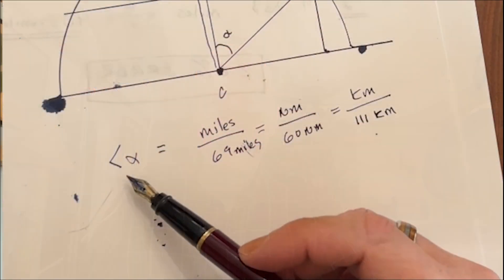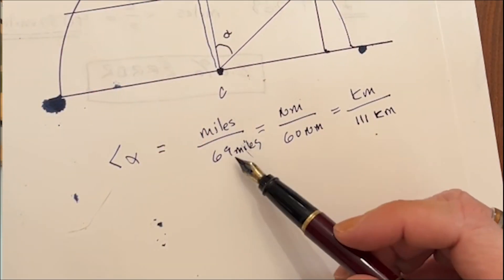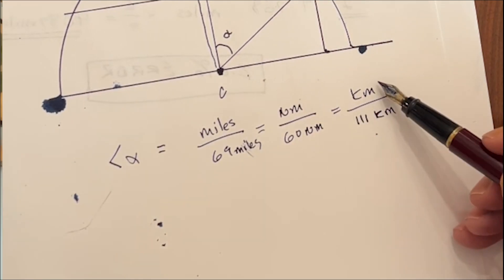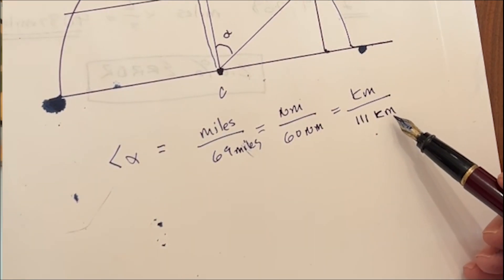How many degrees would that be? Well, it depends on the unit of measurement you're using. If it's statute miles, one degree equals 69 statute miles on Earth. If it's nautical miles, it's one every 60 nautical miles. And if it's kilometers, it's one every 111 kilometers.